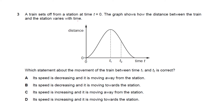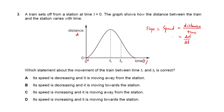Question 3: a train starts from a station at time t=0. The graph shows distance versus time. Which statement about the movement between t1 and t2 is correct? The slope of a distance-time graph gives speed. Between t1 and t2, the slope starts at zero and increases, meaning speed is increasing as the train moves away from the station.